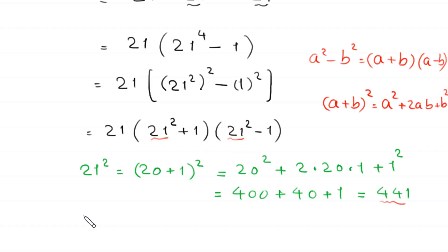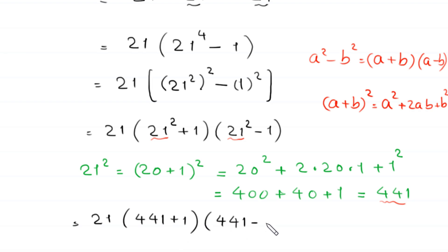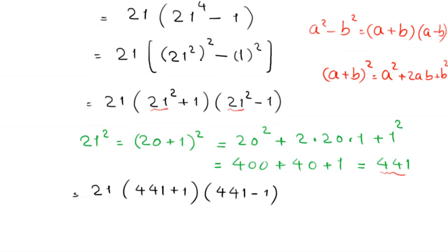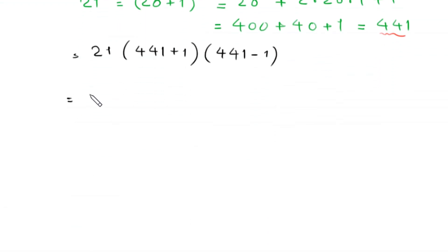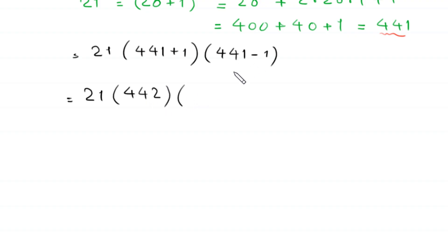So this expression becomes 21 times (441 plus 1) times (441 minus 1). Next, 441 plus 1 becomes 442, and 441 minus 1 becomes 440. So the expression is now 21 times 442 times 440.